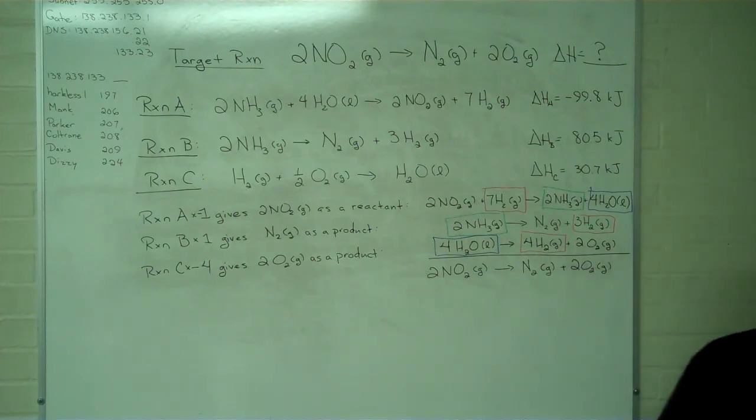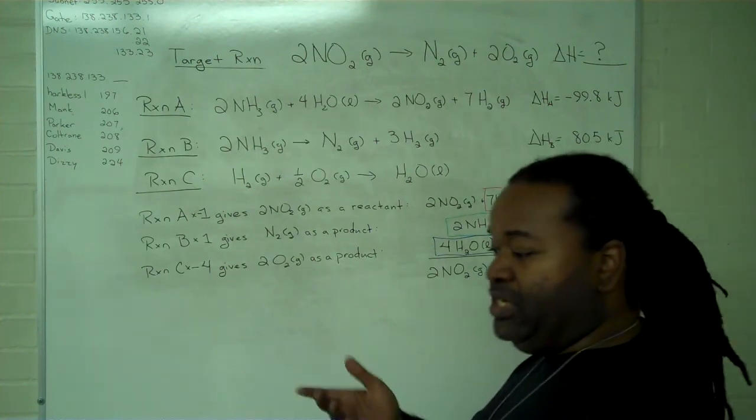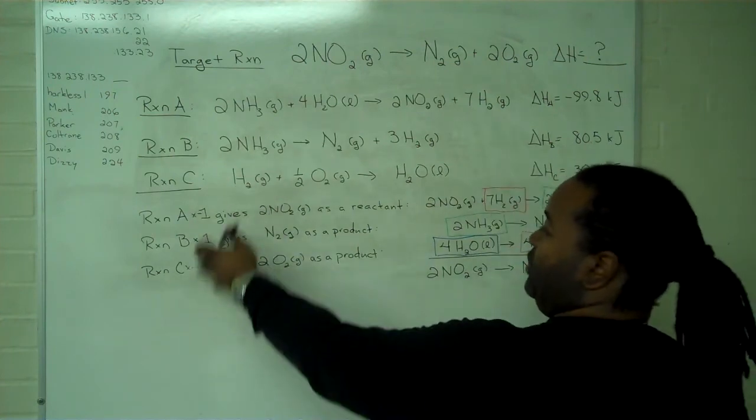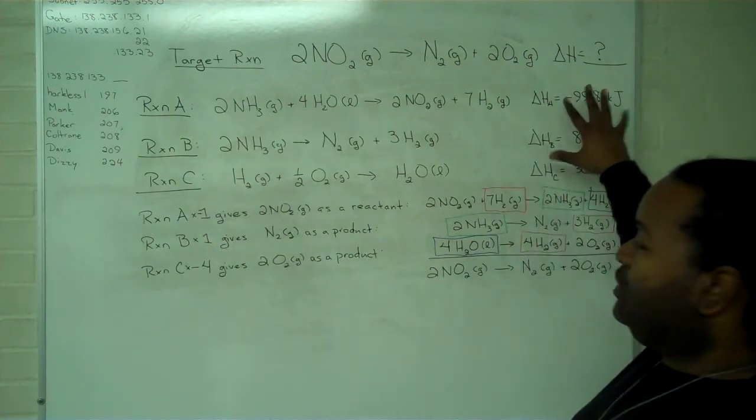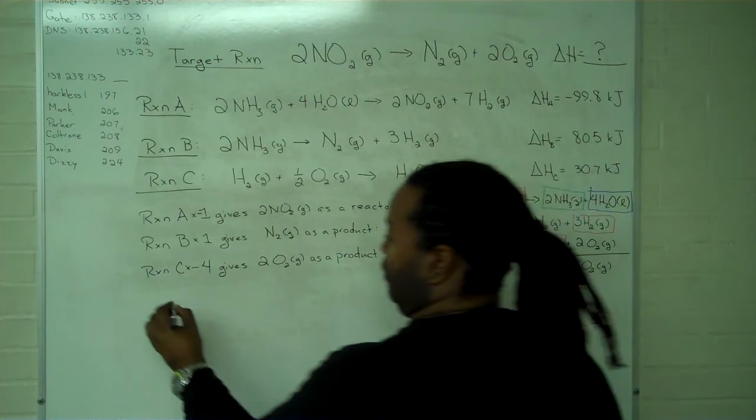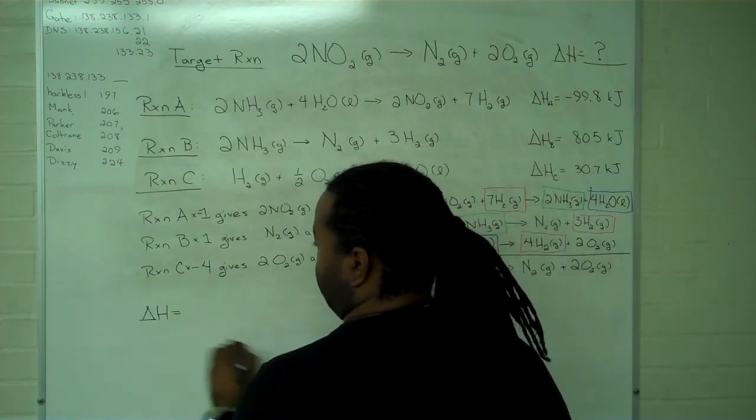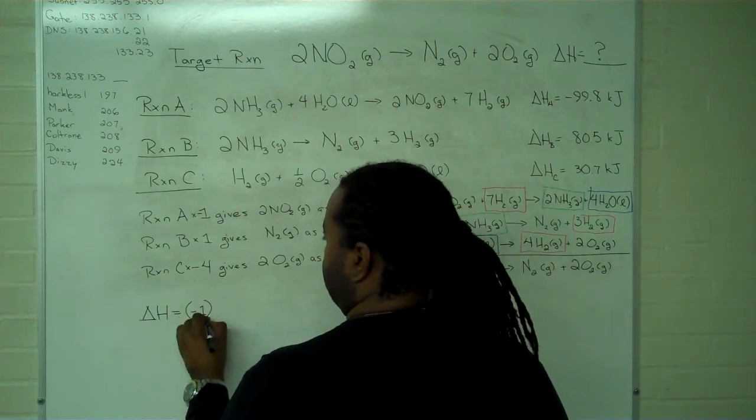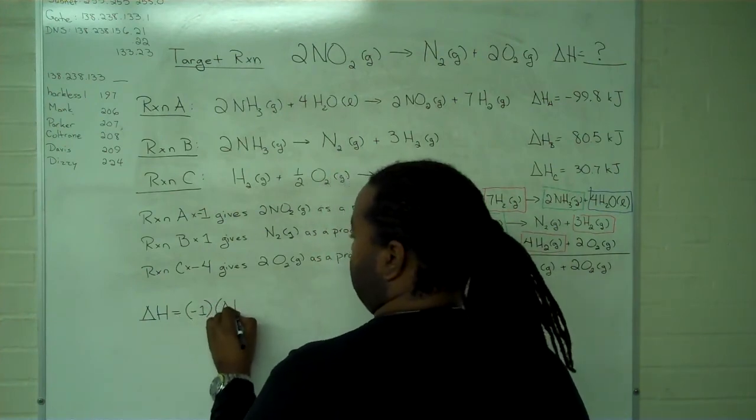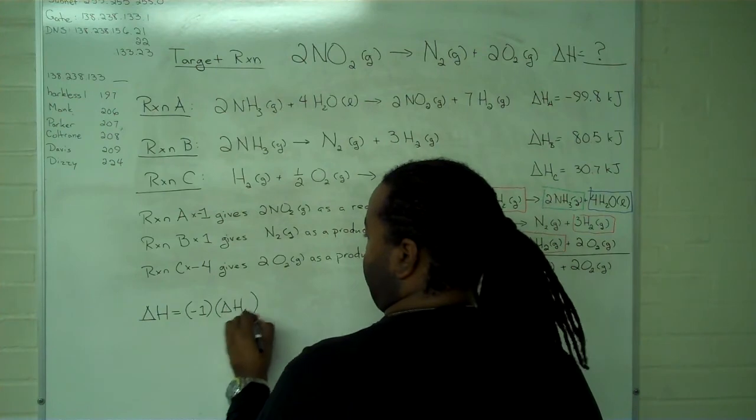Because I've passed this check step, now I only have to apply these same manipulations to the delta H values and add them all up. So the delta H for our target reaction is going to be negative one times the delta H for reaction A.